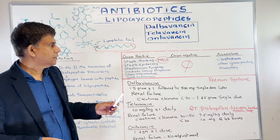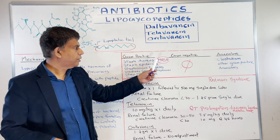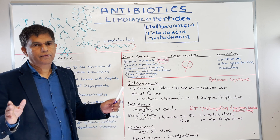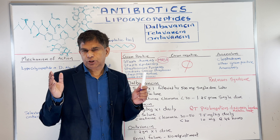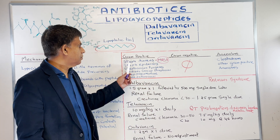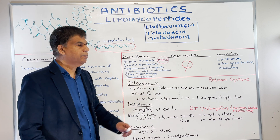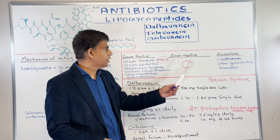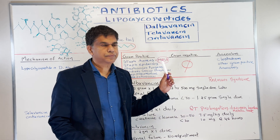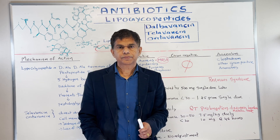Next, let's look at the coverage. We have our table — gram-positive, gram-negative, and anaerobes. Mainly, this is gram-positive only. These drugs are made especially because of MRSA, methicillin-resistant Staphylococcus aureus. Coverage includes MRSA, Staph epidermidis, Streptococcus viridans, Strep pneumoniae, and some enterococci. There is no gram-negative coverage. For anaerobes, it covers gram-positive anaerobes only, not gram-negative.